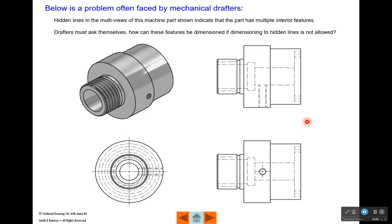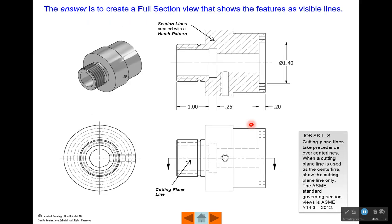Here's a problem often faced by mechanical drafters. You start to draw your views - a front, a side, and a top view. As you draw it, you realize you have a bunch of interior feature, and that interior feature is represented with hidden lines. The question that a drafter has to ask themselves is, how am I going to dimension all this interior feature if I can't dimension to hidden lines?